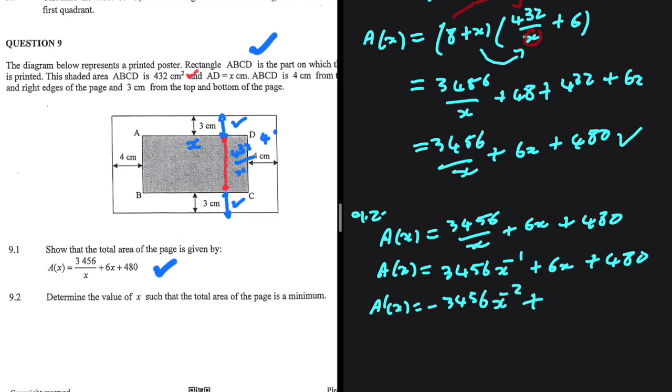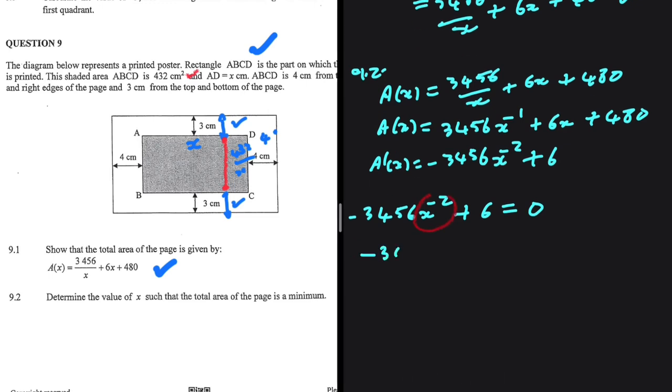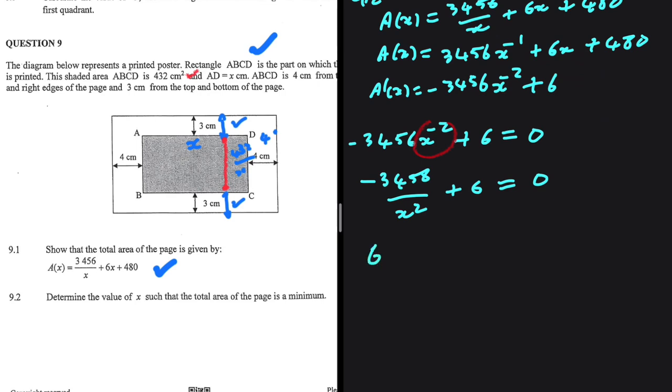Let's now equate to 0. Minus 3456 x to the minus 2 plus 6 is equals to 0. x to the minus 2 is problematic so let's write it as minus 3456 divided by x squared plus 6 being equals to 0. We can multiply both sides by x squared. If we do that we're gonna get 6x squared minus 3456 being equals to 0.